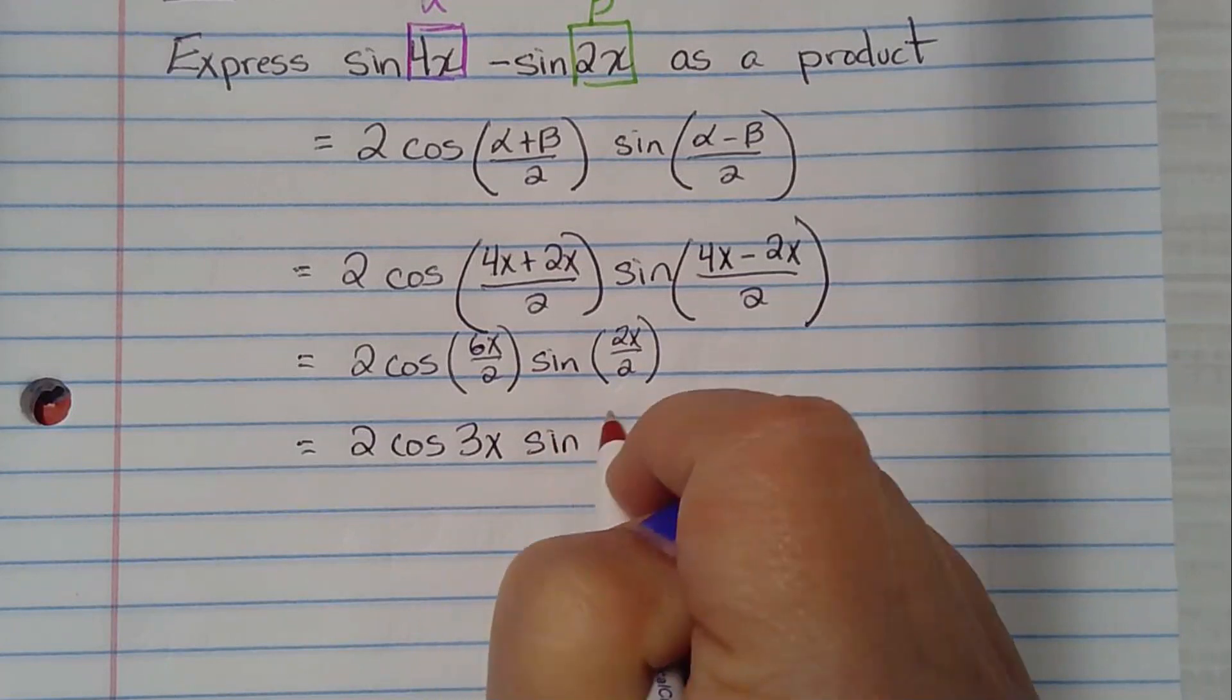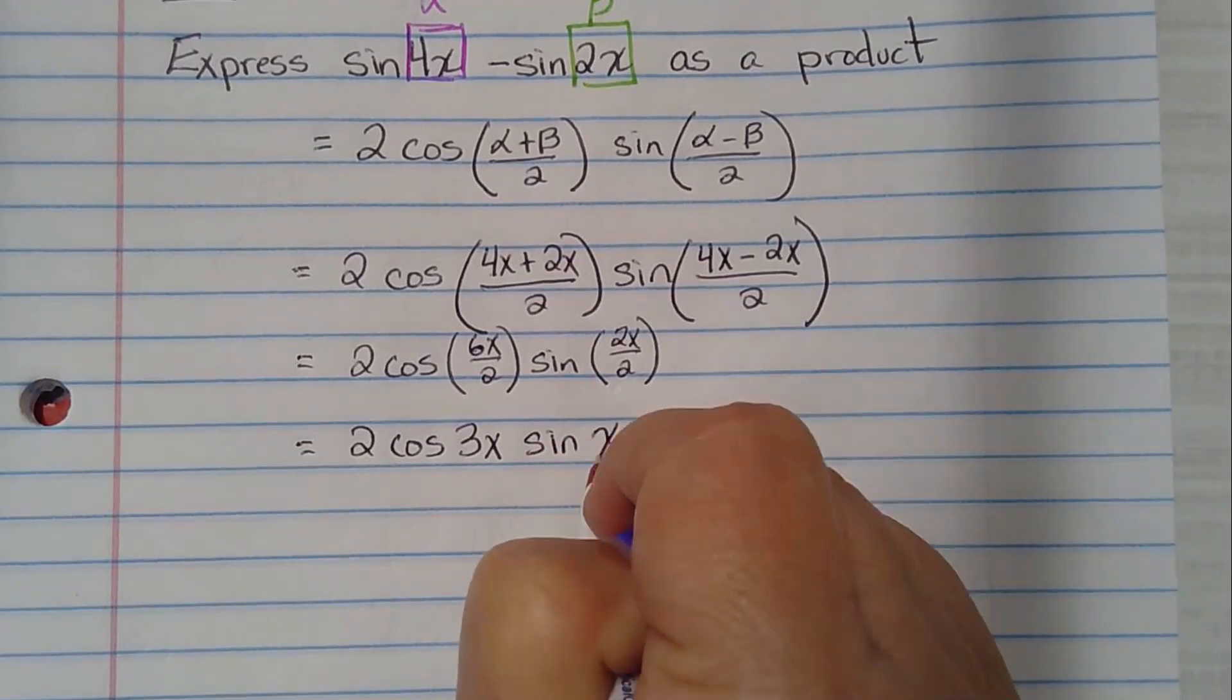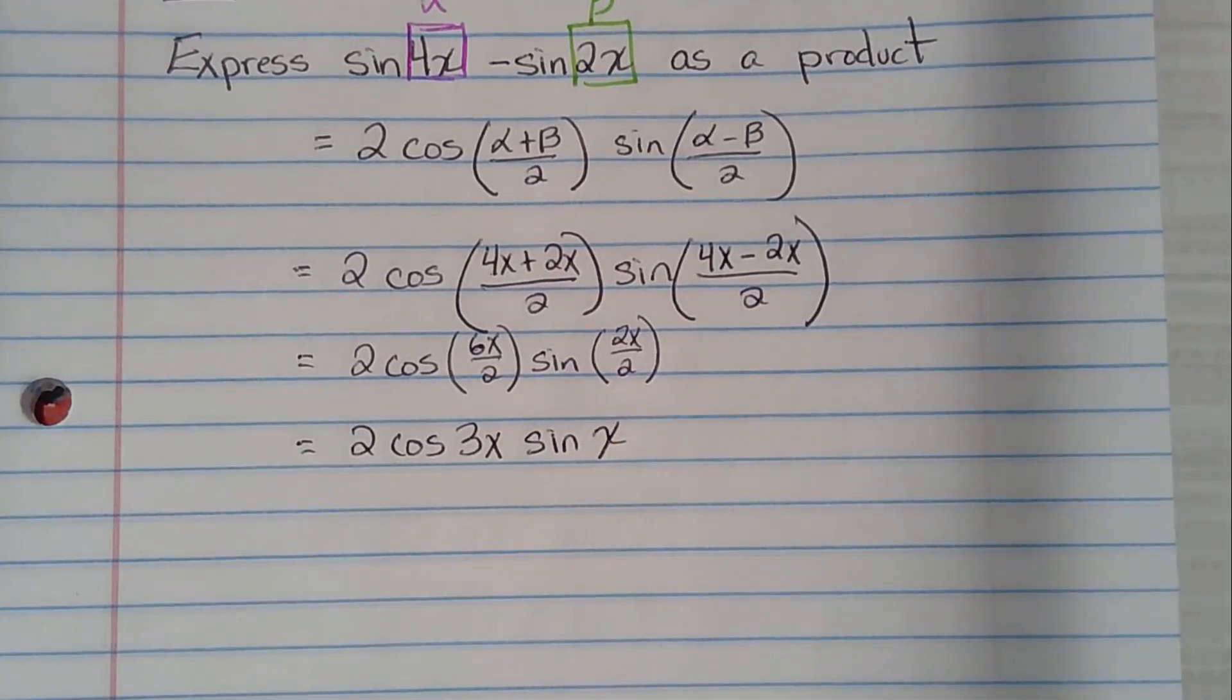2x divided by 2 is just x. Notice that what we have right now is a product. It is 2 multiplied by cosine 3x multiplied by sine x. So it is a product because the only operation we have is multiplication. So we have expressed it as a product. We are done. That's it.